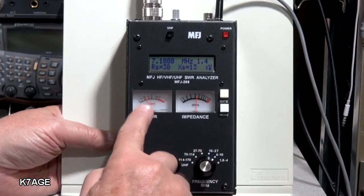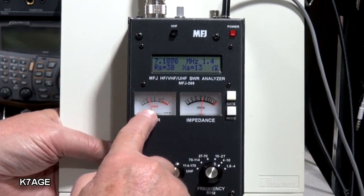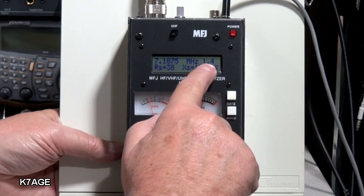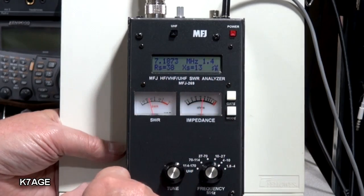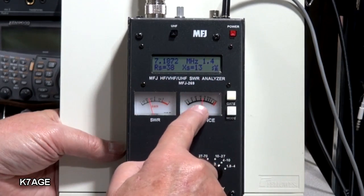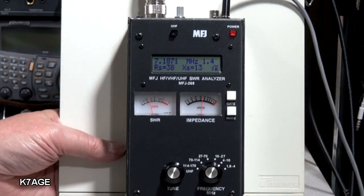There's a meter here that shows SWR. And on the 269 it actually also shows you SWR digitally in the top. And this shows you the impedance. And we're aiming for 50 ohms.